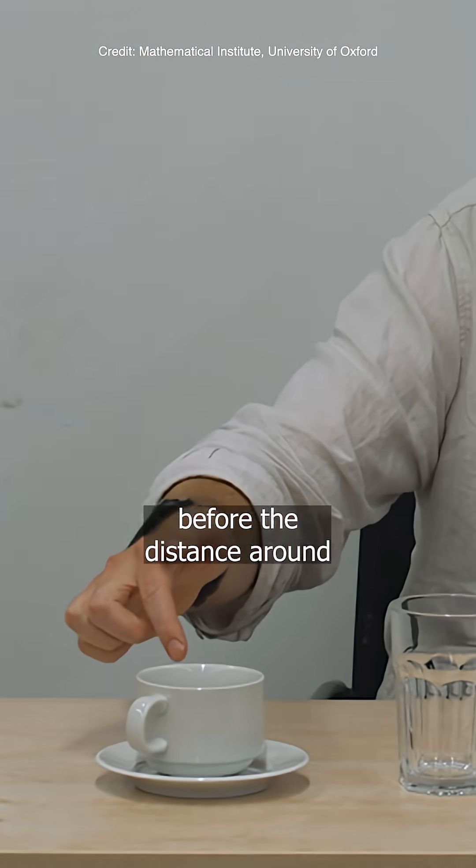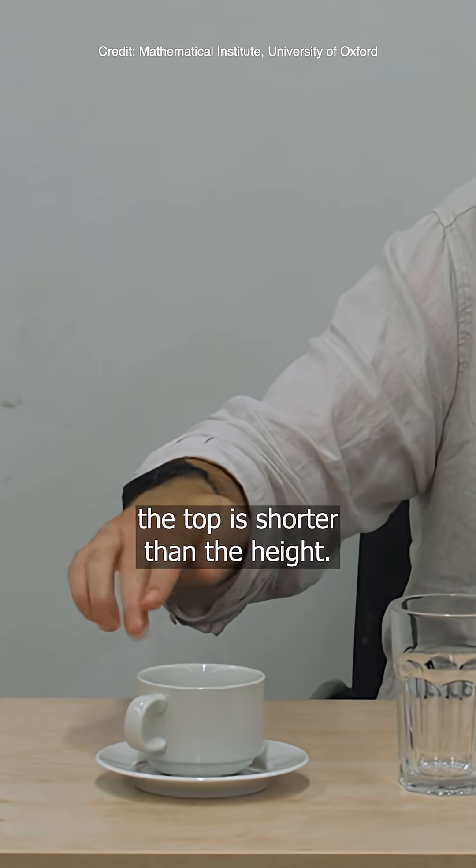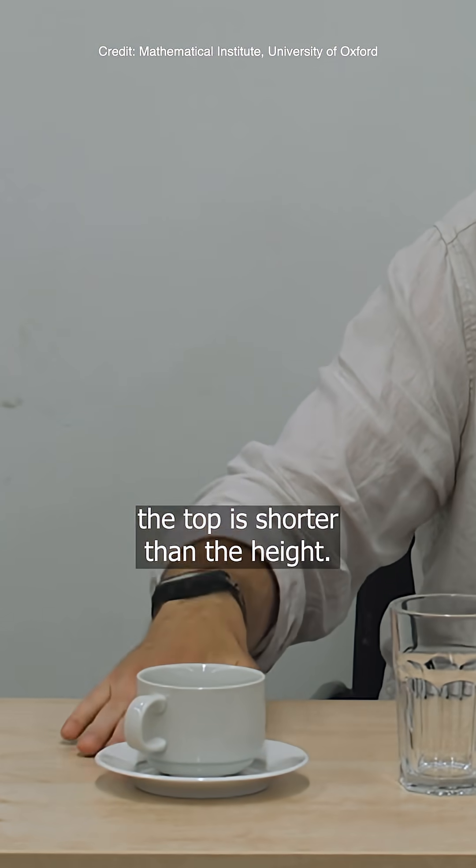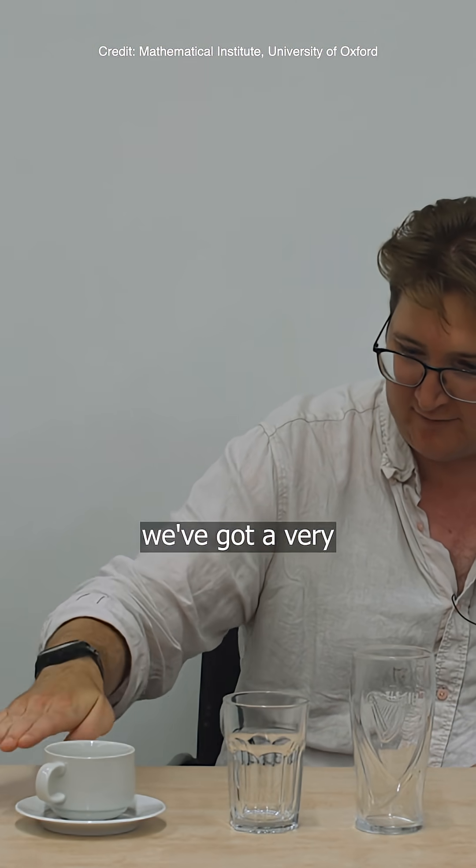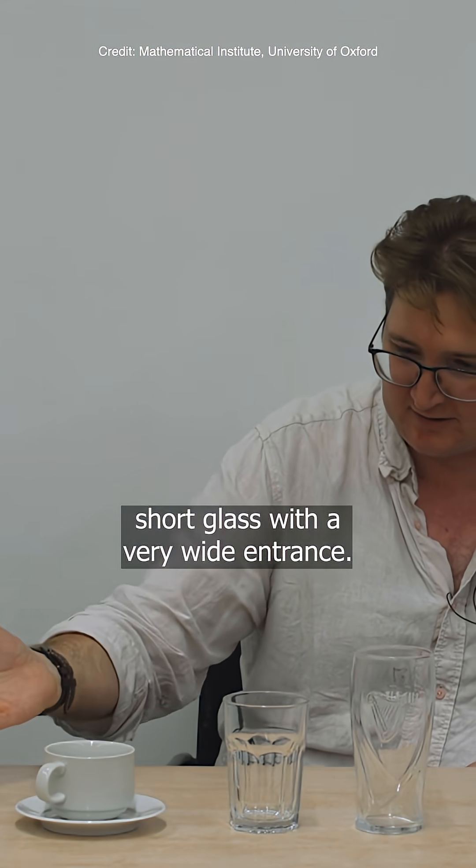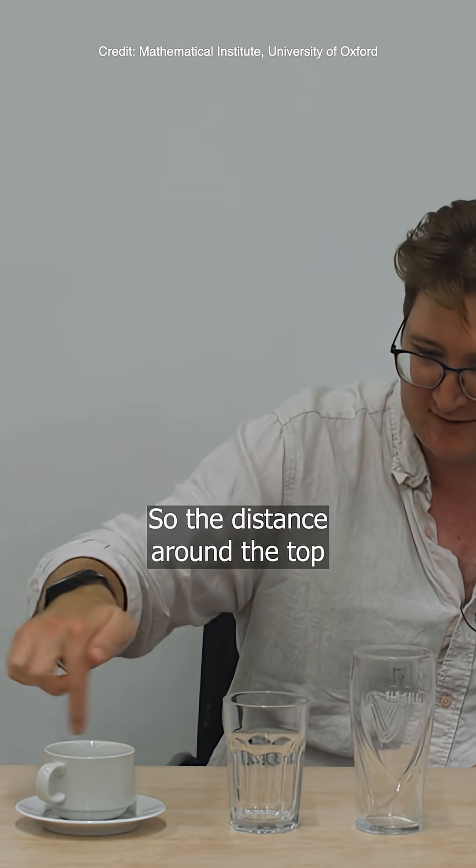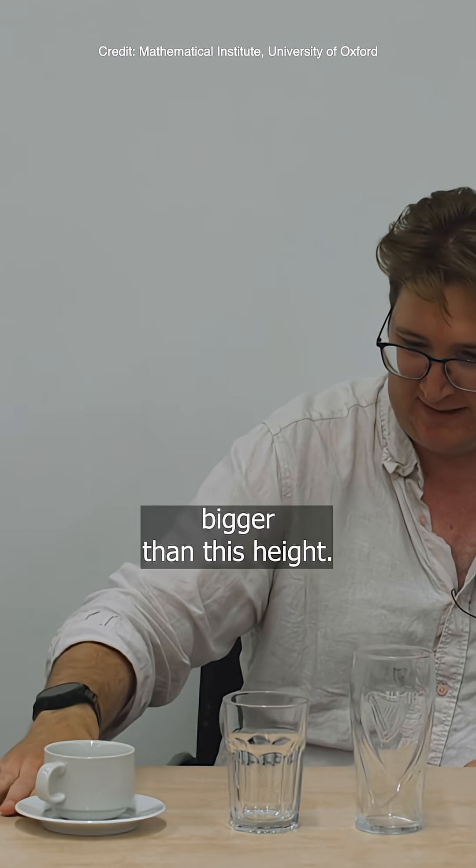How far along here do you have to go before the distance around the top is shorter than the height? So at this end, going around the top of here, we've got a very short glass with a very wide entrance. So the distance around the top feels like it should be much bigger than this height.